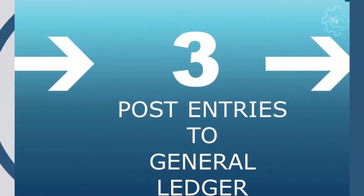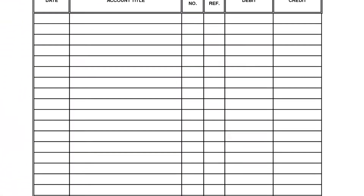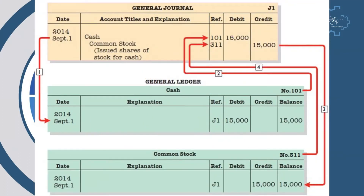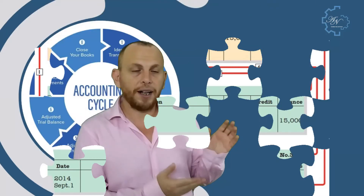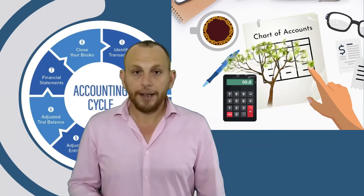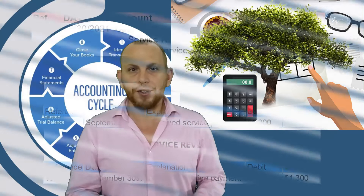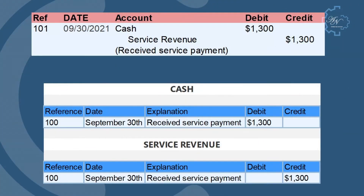Step number three: post entries to the general ledger. Once the journal entry has been created, the next step in the accounting cycle is posting. Posting is the transfer of journal entries to the general ledger. The chart of accounts differs from business to business depending on how detailed you want your ledger to be. Here's what the previous journal entry would look like posted in the ledger — we can see two accounts.